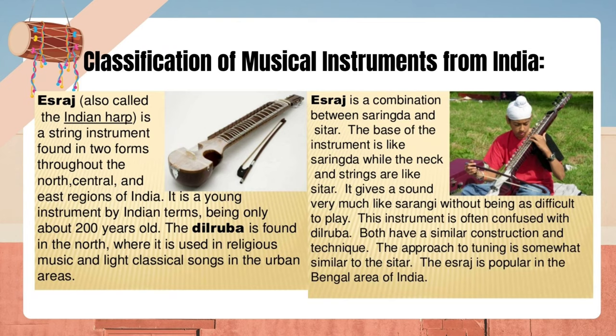S-raj, also called the Indian harp, is a string instrument found in two forms throughout the north-central and east regions of India. It is a young instrument by Indian terms, being only about 200 years old. The Dilruba is found in the north, where it is used in religious music and light classical songs. S-raj is a combination between Sarangda and sitar — the bass of the instrument is like Sarangda while the neck and strings are like sitar. It gives a sound very much like Sarangi without being as difficult to play. This instrument is often confused with Dilruba, and the S-raj is popular in the Bengal area.